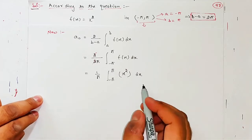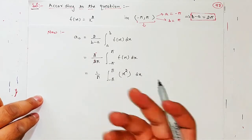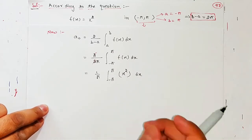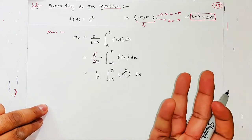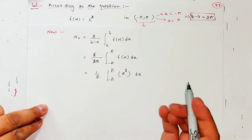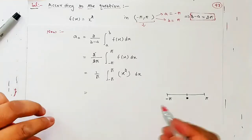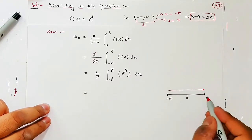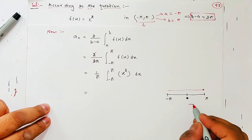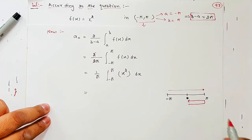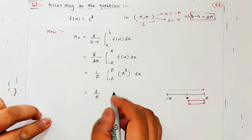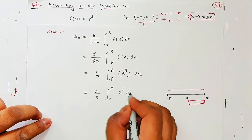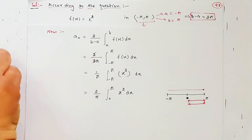Ab next step thoda dhyan se dekhiyega. Yeh toh simple hai — yeh aap tab tak yahi kar rahe the. But maine aapko bataya ki jab aapka function even hota hai, toh kuch time save ho jaati hai. Jaise is case mein bₙ = 0 hai. Ab rest of the integration mein — a₀ aur aₙ — unme aapko kuch faayda milta hai. Minus pi to pi integration ki bajaaye, main isko twice karke 2/π × integral from 0 to π kar raha hoon. Yeh faayda uthaana na uthaana aapki marzi hai.